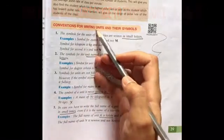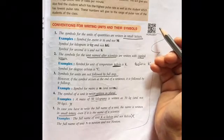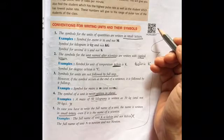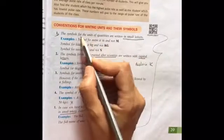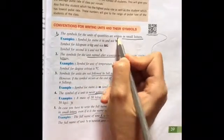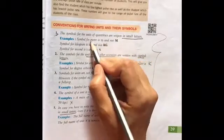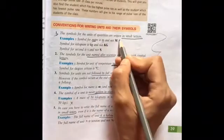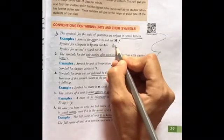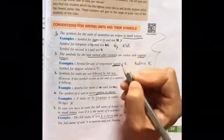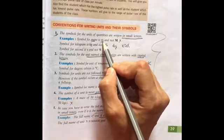Conventions for writing units and their symbols. These are the rules that you should follow when you are writing the units of different physical quantities. First, the symbols for the units are written in small letters. You should use small letters like meter we use small m, not capital M. Kilogram we use small k and g, not KG. This KG is incorrect. Whenever we have to write any physical quantity unit, we are going to use small letters.